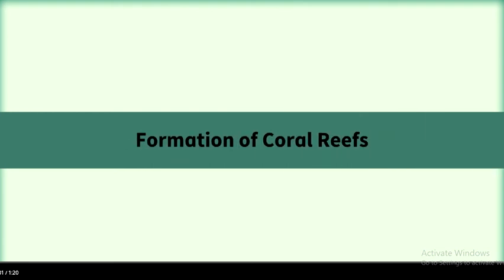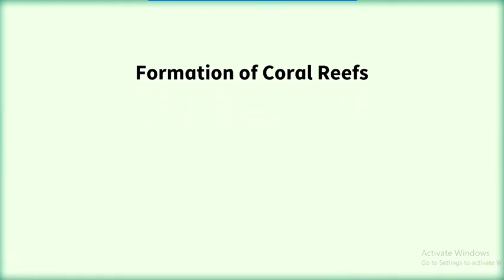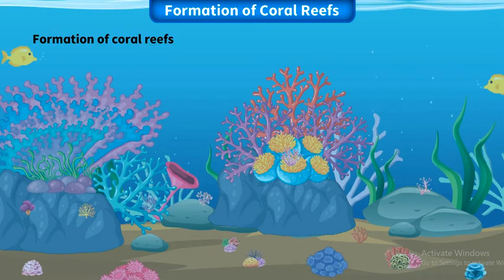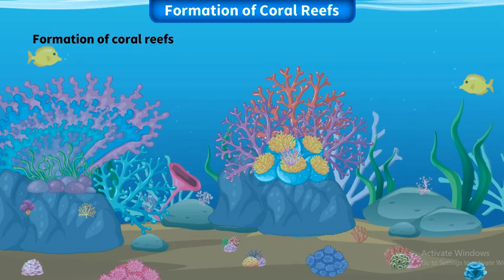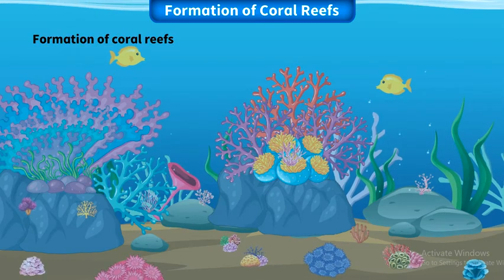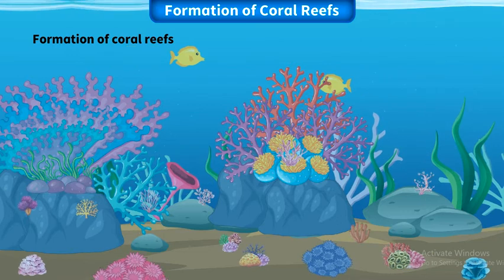Let us learn about the formation of coral reefs. Coral reefs are one of the oldest ecosystems on Earth. They first appeared around 500 million years ago.